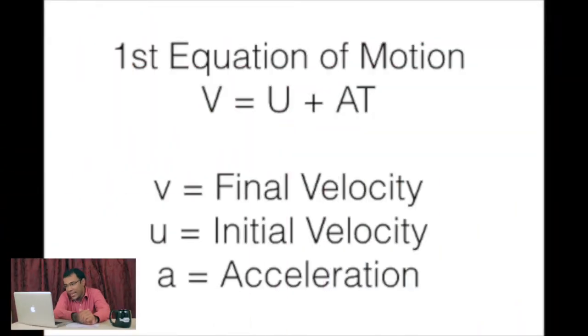So let us use this law of homogeneity of dimensions to verify the first equation of motion, which is V is equal to U plus AT. The terms involved are: final velocity V, initial velocity U, and acceleration parameter A multiplied by time T. These dimensional formulae can be added and result in the same dimensional formula if the addends are the same. If you add a velocity and a velocity, it is going to be a velocity — they obey the closure property.